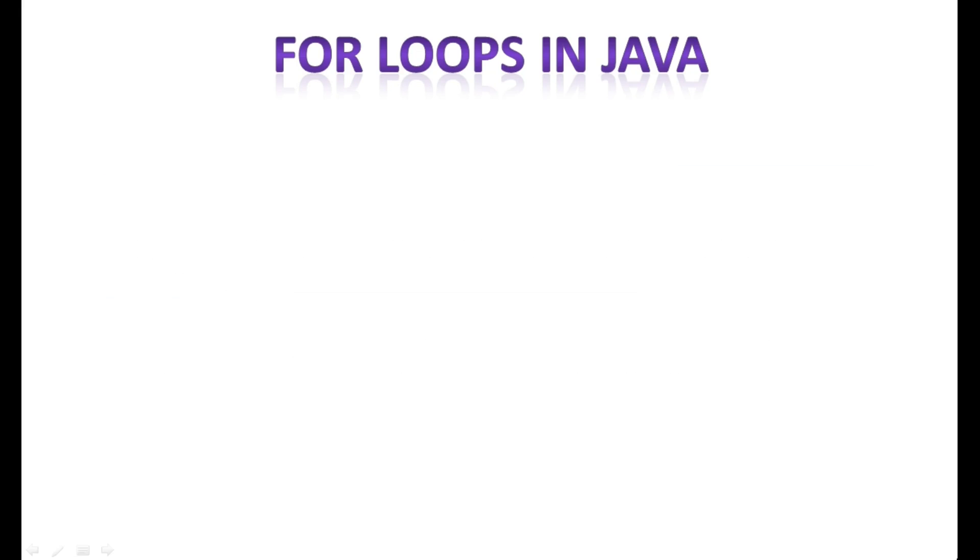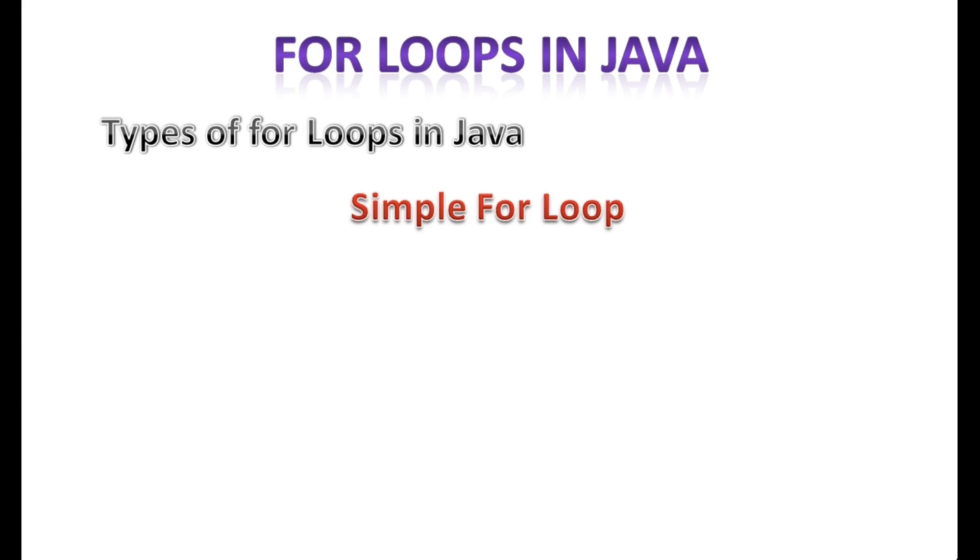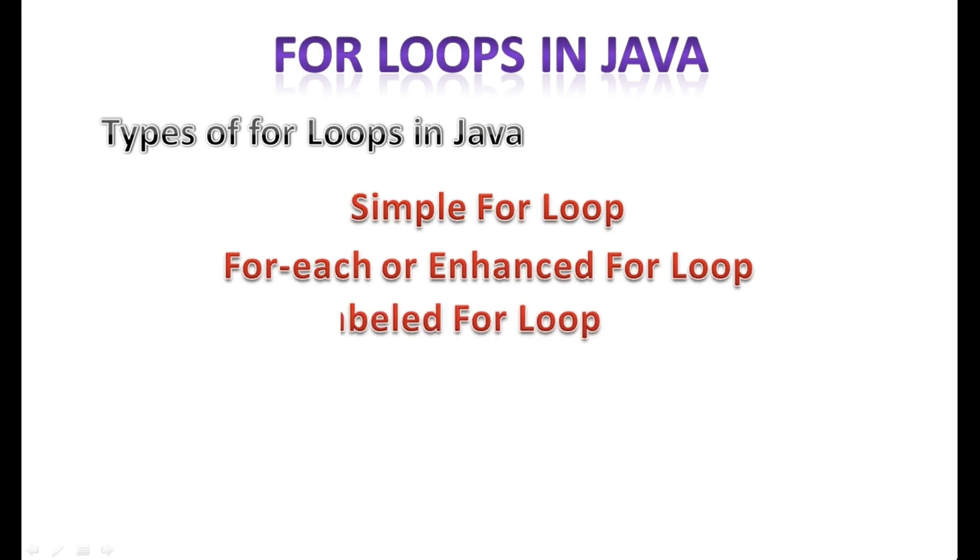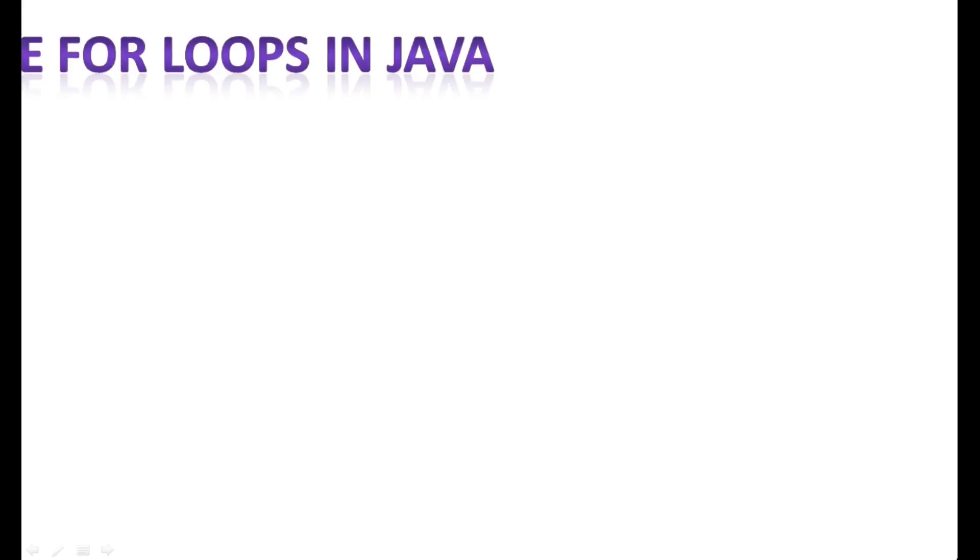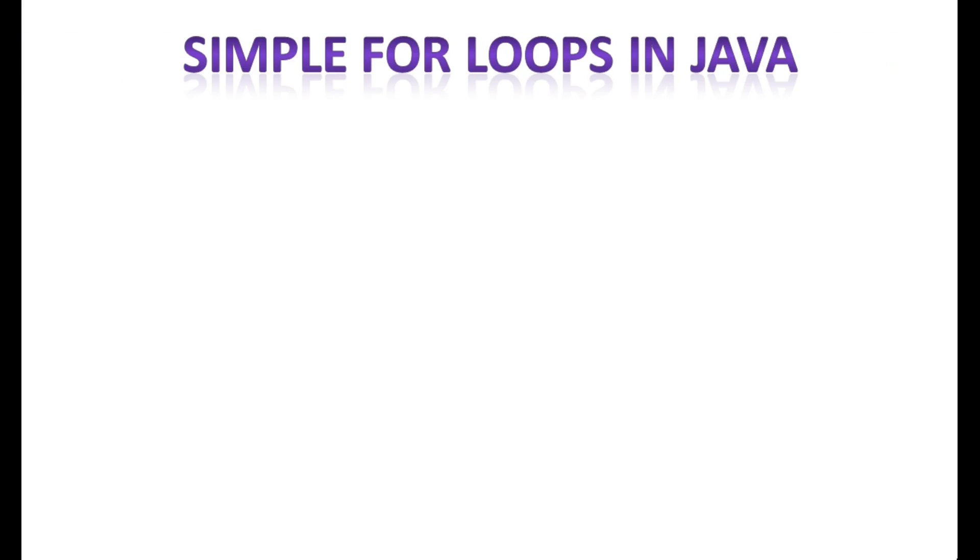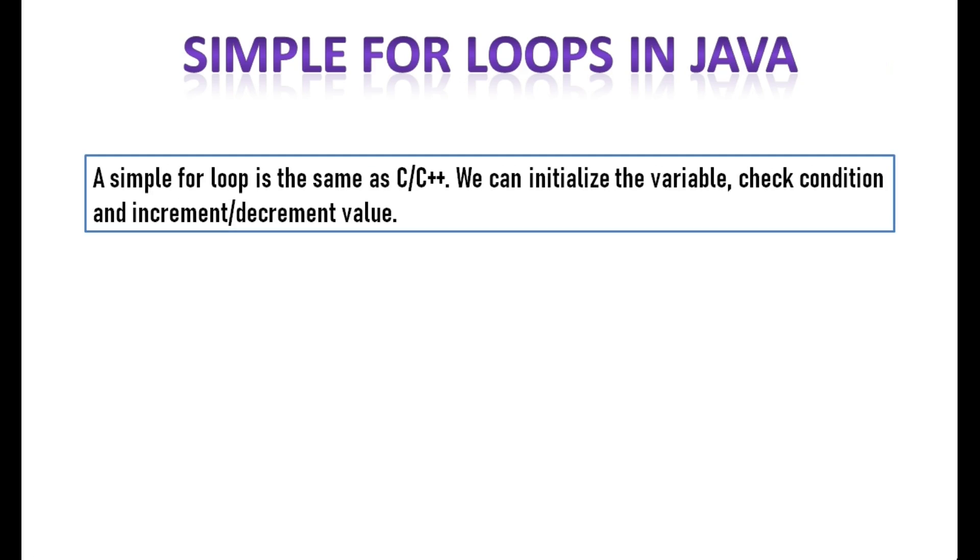There are three types of for loops in Java. Simple for loop, for each or enhanced for loop, labeled for loop. Now I will explain one by one in detail. Java simple for loop. The simple for loop is the same as C or C++. We can initialize the variable, check condition, and increment decrement value. It consists of four parts.